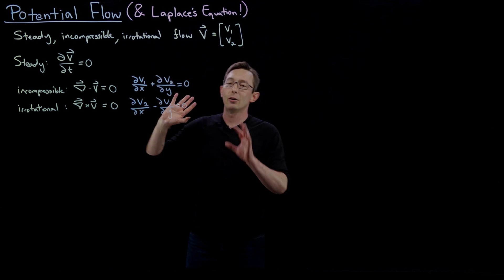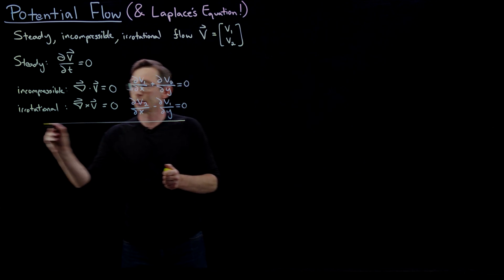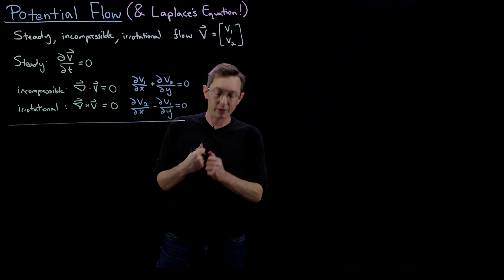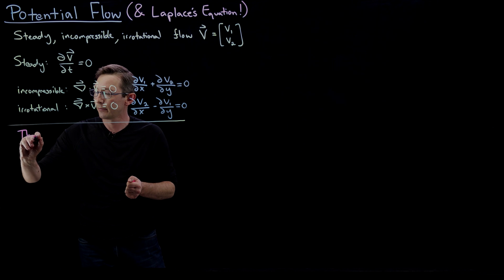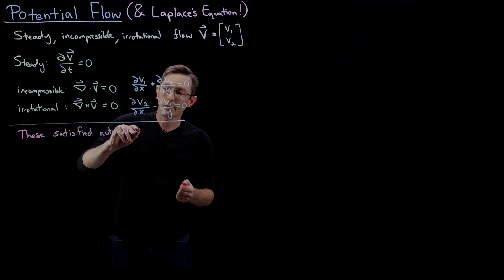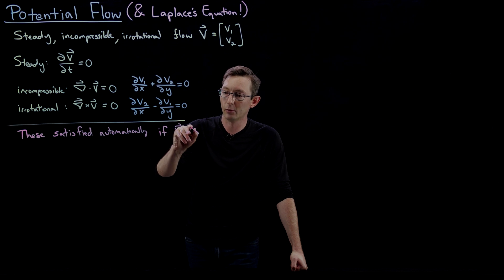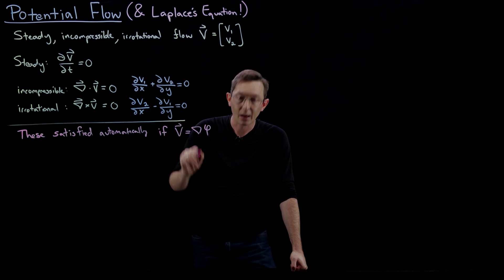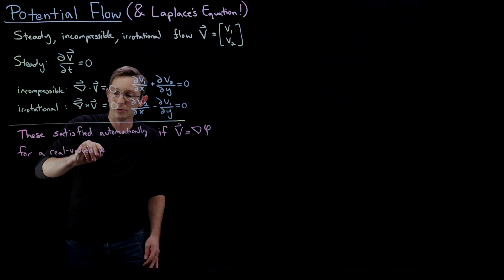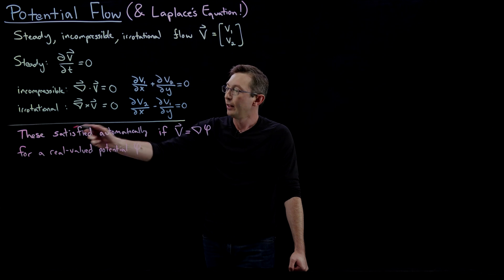What vector fields actually satisfy these conditions? It turns out that incompressibility and irrotationality are automatically satisfied if we have a gradient flow — if v equals the gradient of some potential φ, for a real-valued potential φ. We've already talked about potential fields and gradient flows, so this is a gradient flow. This is automatically satisfied for a real-valued potential φ.